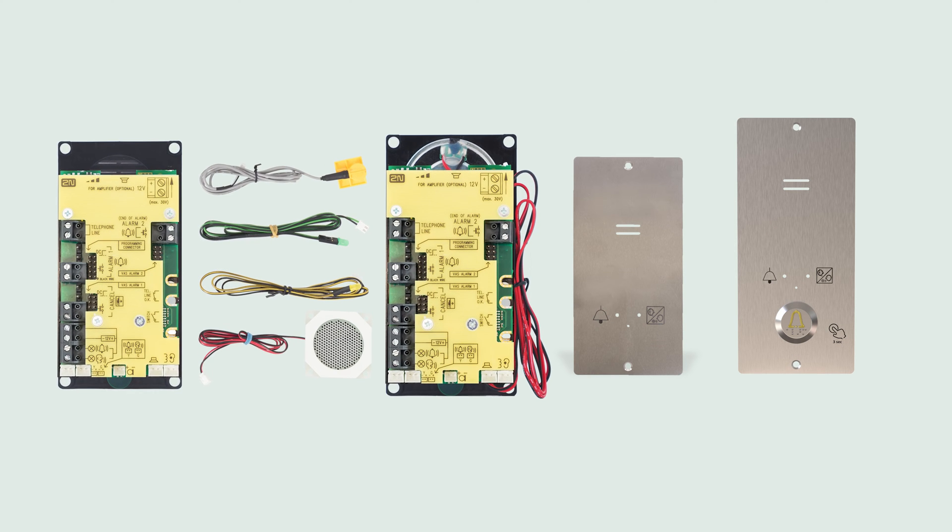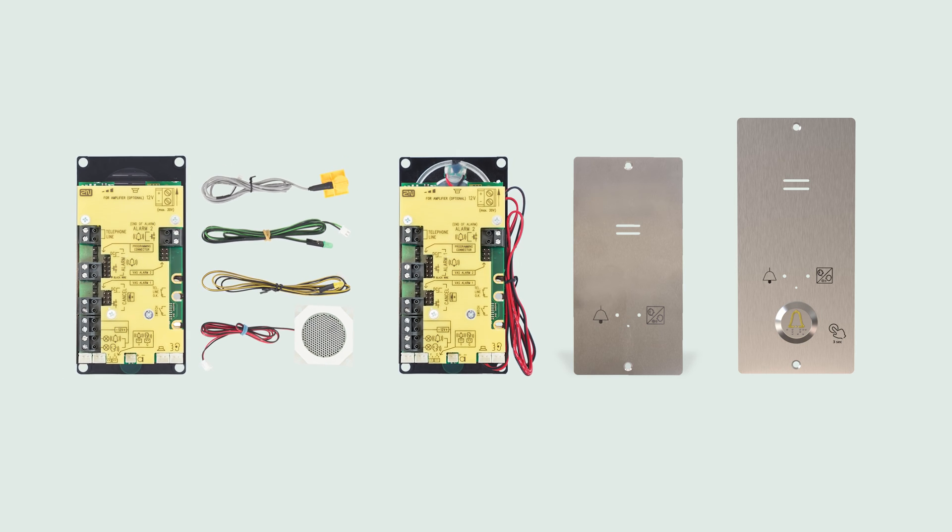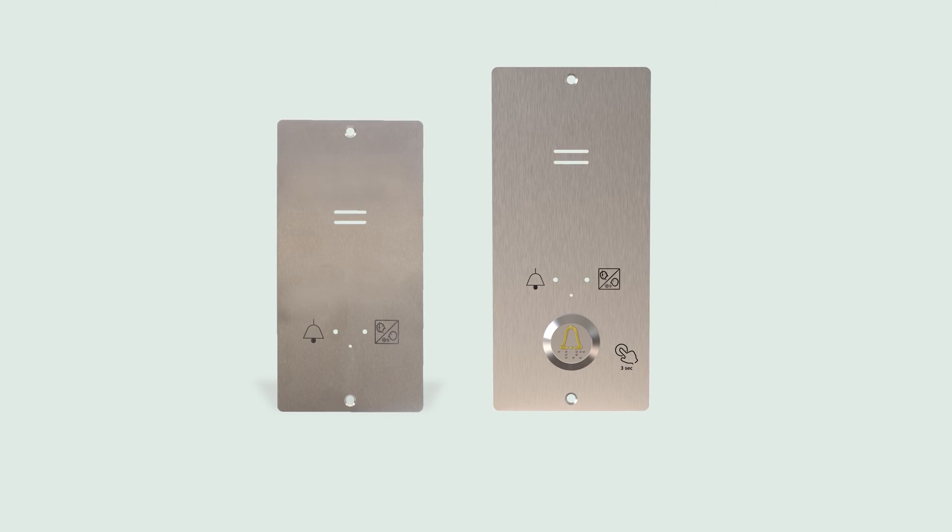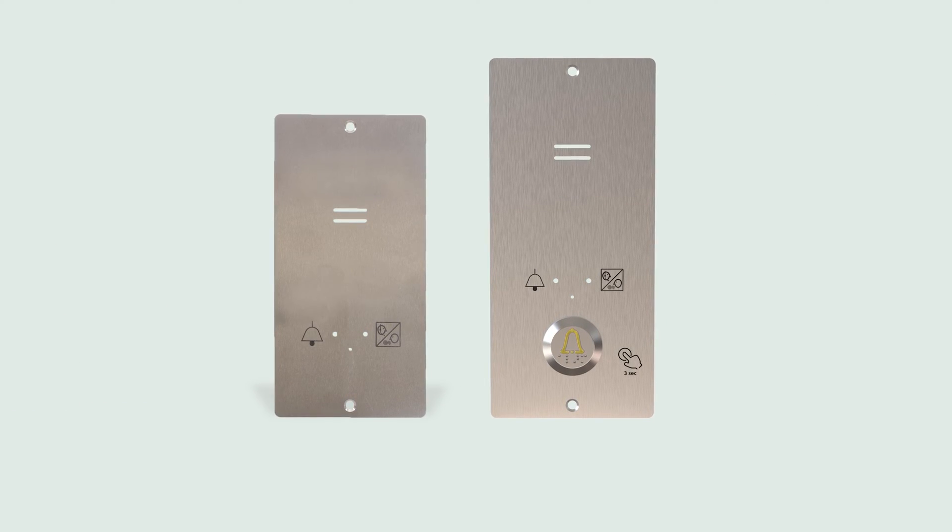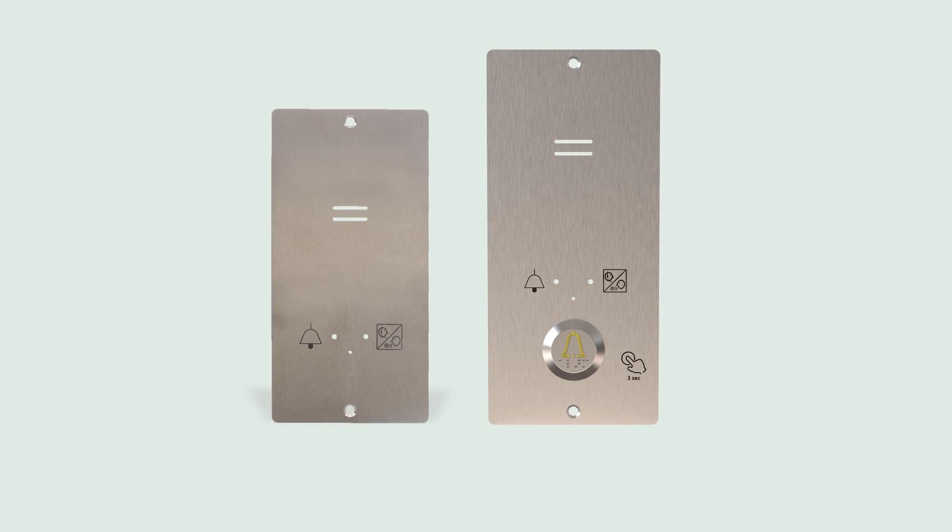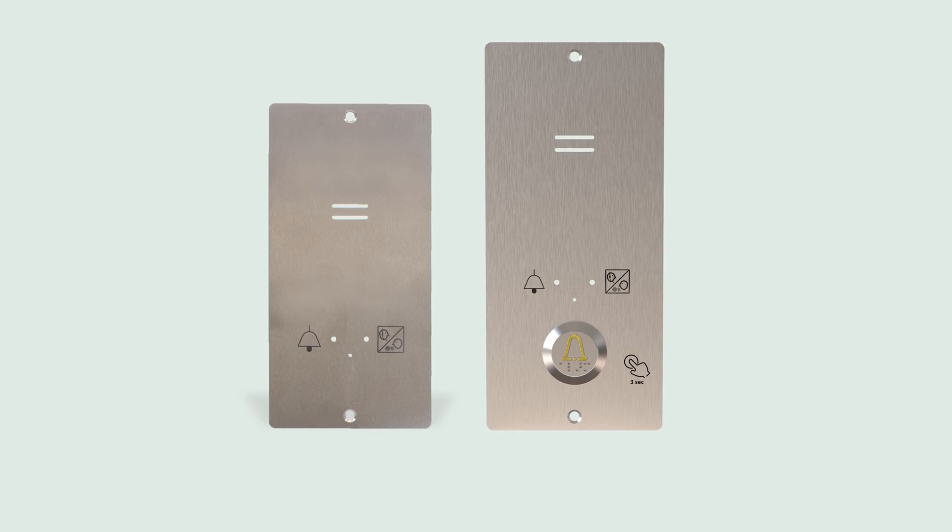Two are PCBs designed to be connected to an external plate, panel, and alarm button. One comes with an integrated mic, speaker, and LEDs, and the other allows you to connect your own to it. The other two are 2N LiftOne COP units with metal plates intended for flush mounting, one with a button and one without.